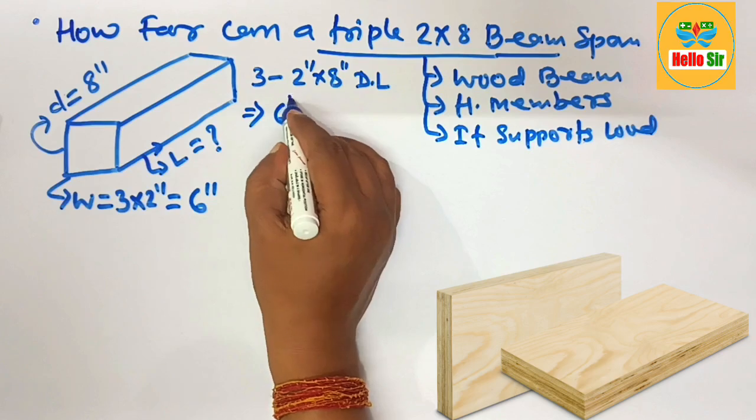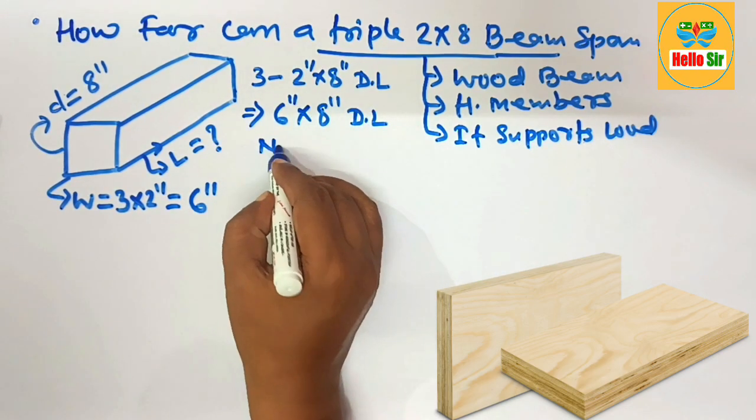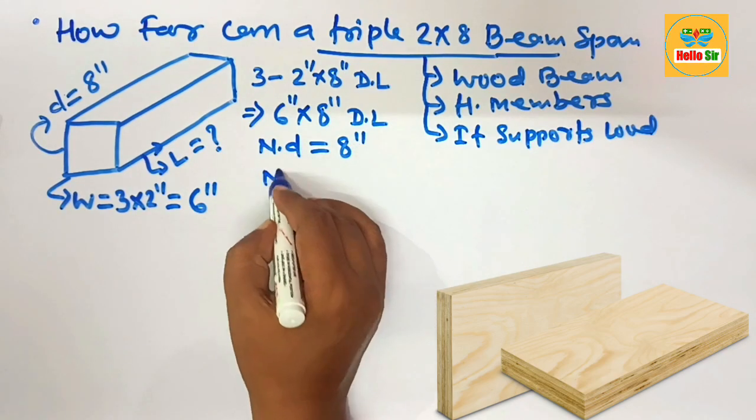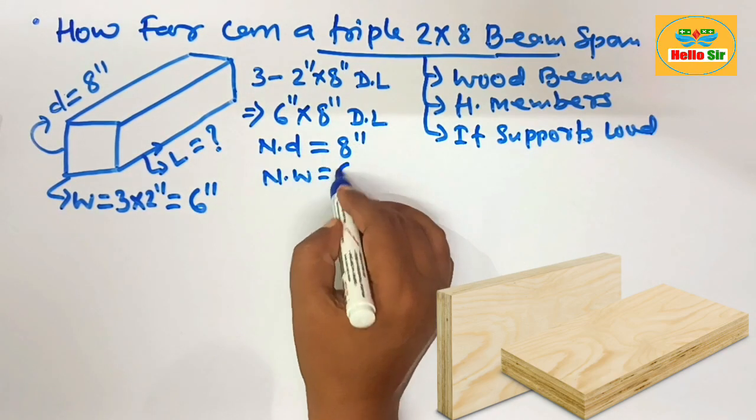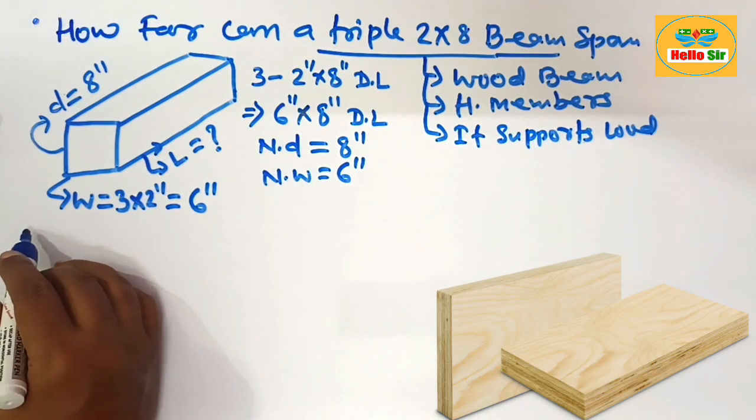In which the nominal depth of beam is about 8 inches and nominal width of this beam is about 6 inches. And there are various factors that determine the span length of beam.